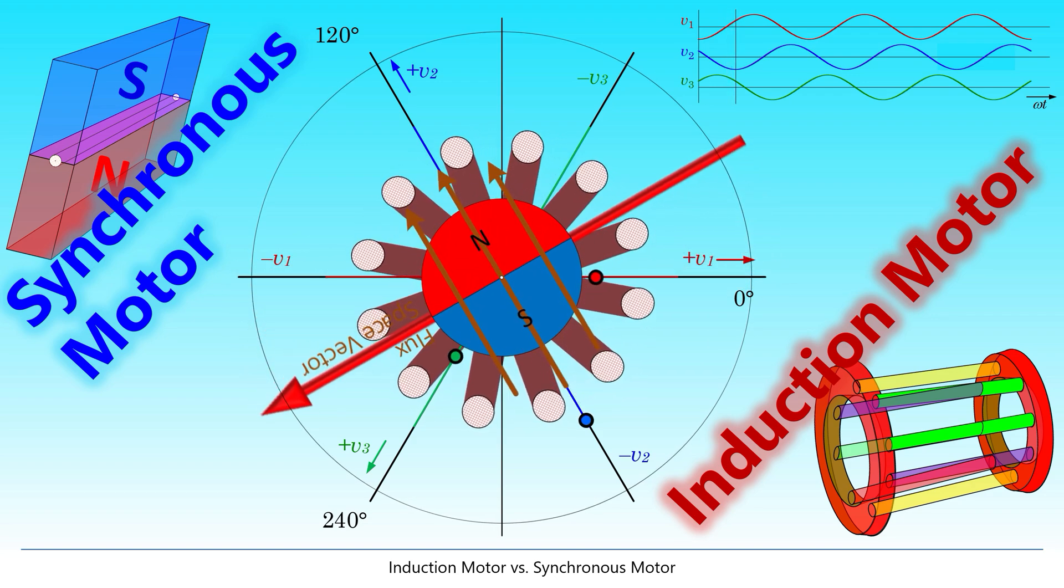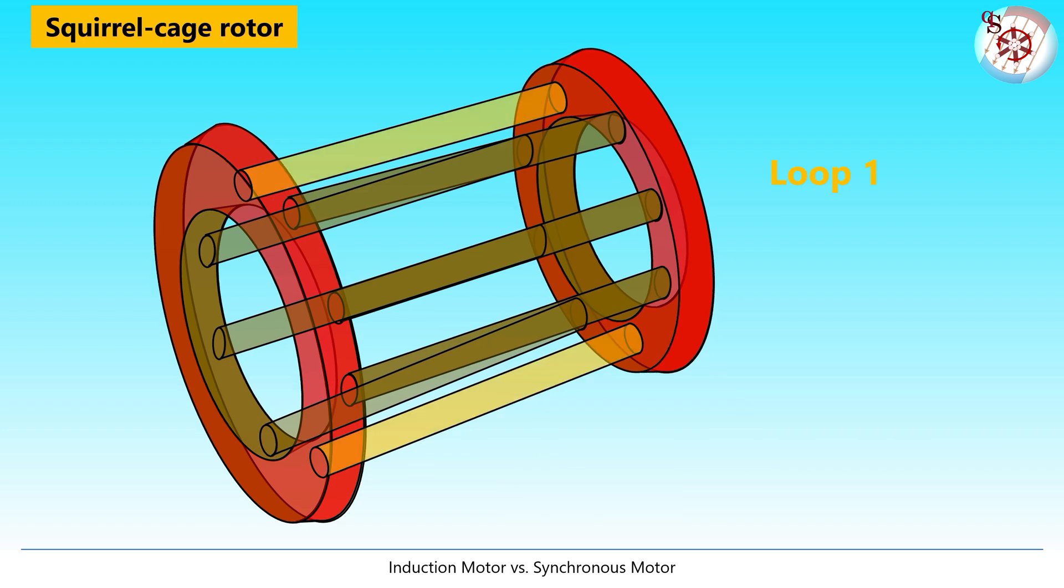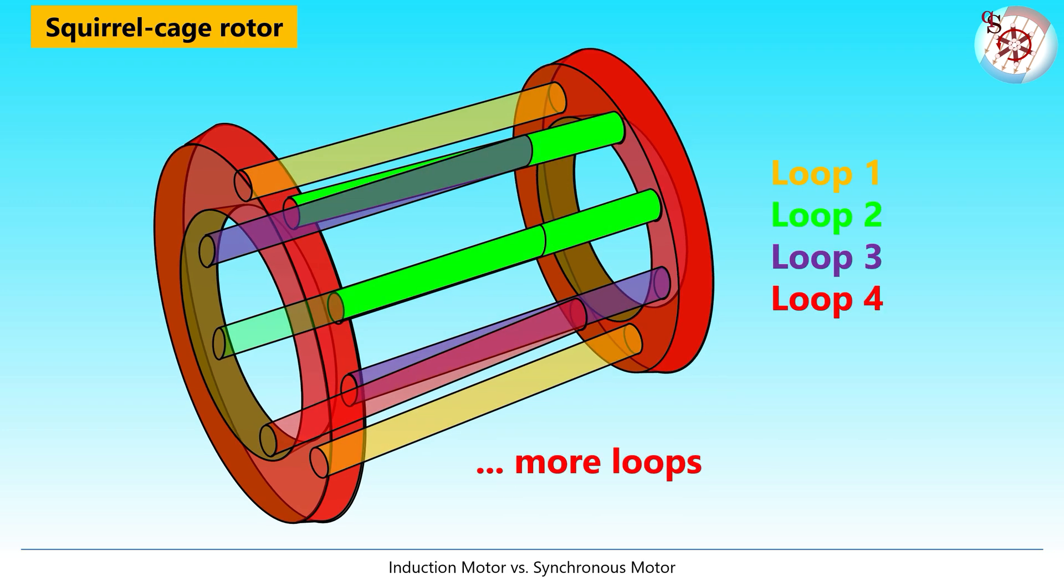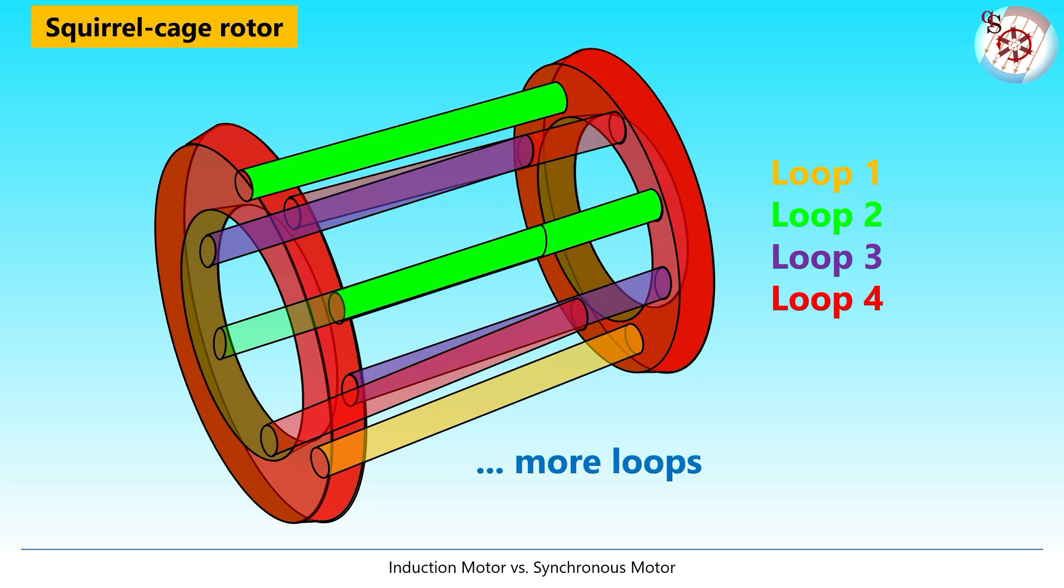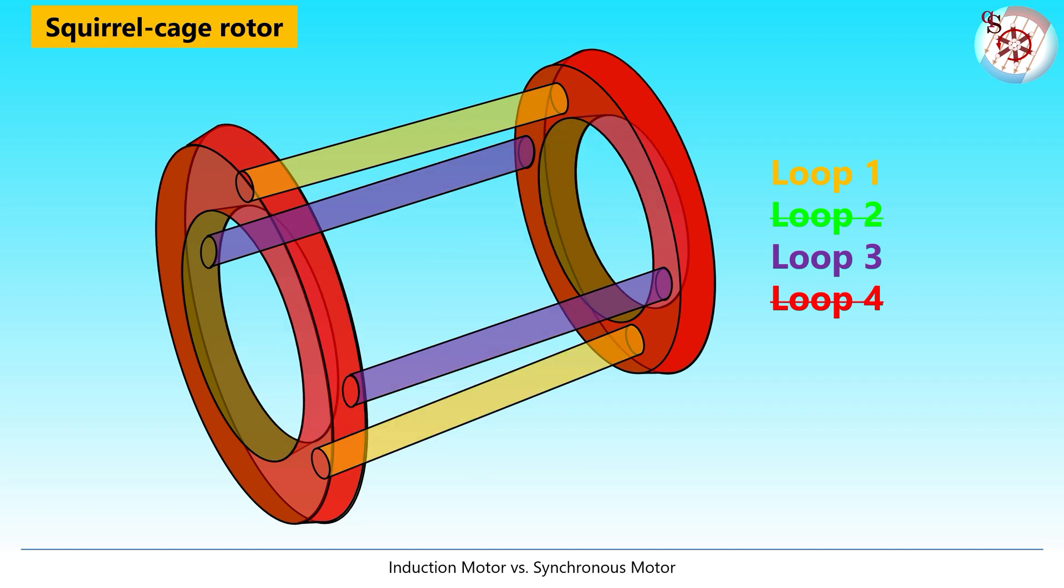The rotor is built like a squirrel cage consisting of short circuit loops. As a consequence of the magnetic field change in the loops, voltages are induced in the squirrel cage short circuit loops. If we want to get down to the basic function of these short circuit loops, it is sufficient to look at just one single loop.